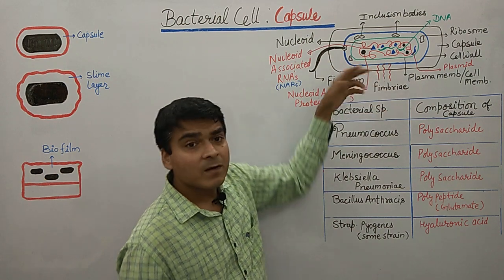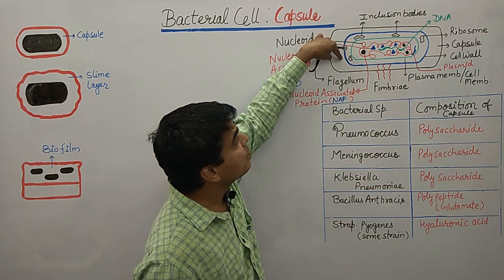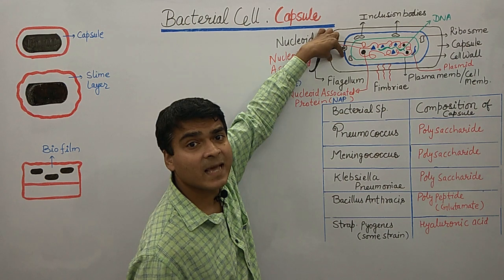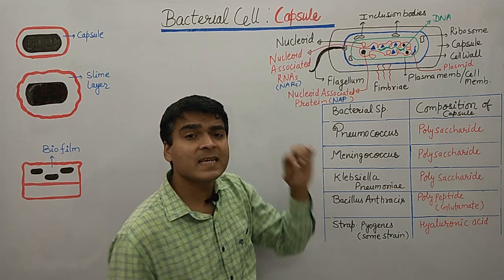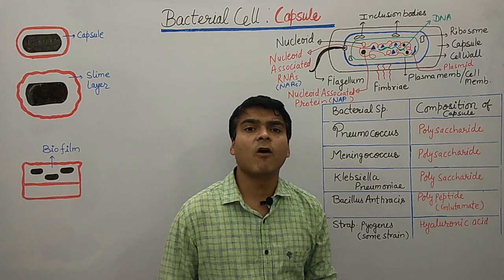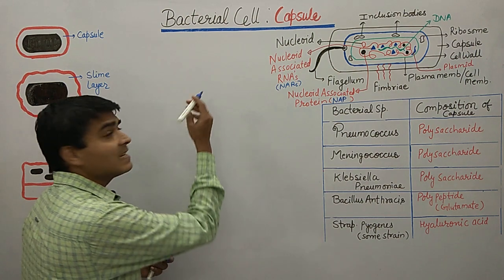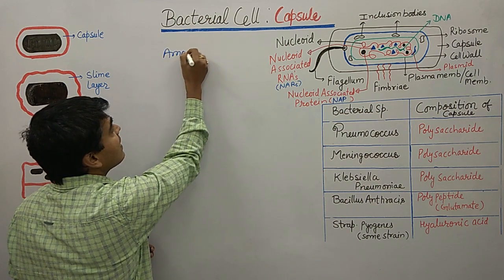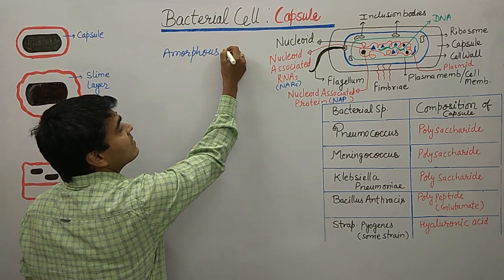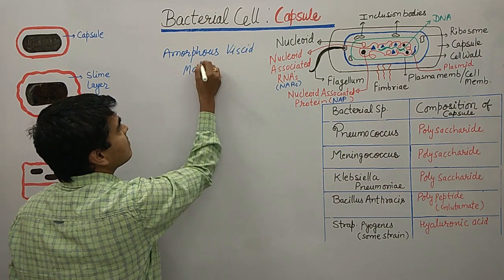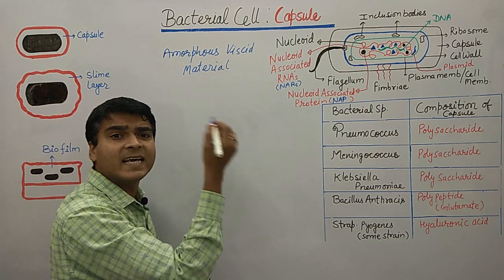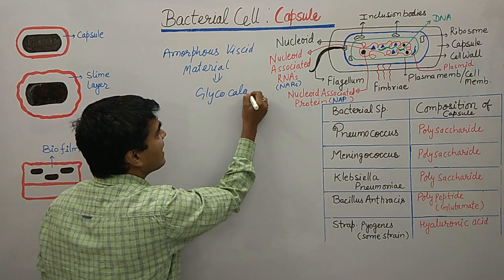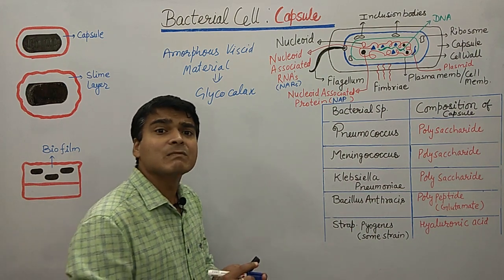Looking at the structure of bacteria: the blue color structure is known as the cell wall, and the outer portion is known as the capsular area. In the bacteria cell wall, the bacterium generally releases some kind of amorphous viscid material. This material is known as glycocalyx.